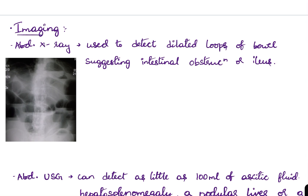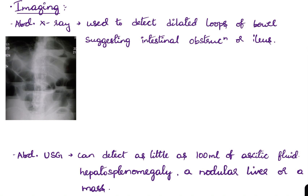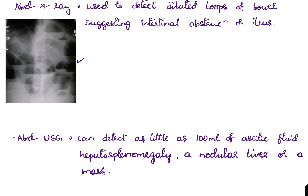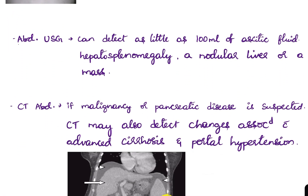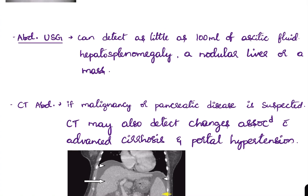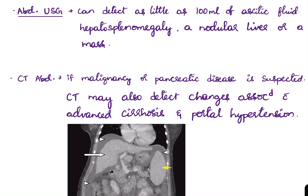Regarding imaging, abdominal X-ray is used to detect dilated loops of bowel suggesting intestinal obstruction or ileus. Abdominal ultrasound is very useful in cases of ascites — it can detect as little as 100 ml of ascitic fluid — and can also identify hepatosplenomegaly, a nodular liver, or a mass.